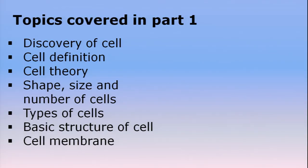Hello children, welcome to today's class. Today we are going to read Part 2 of the chapter 'Fundamental Unit of Life'. I am your teacher, and this is Chapter 5 of your Class 9 Science book. The topics we covered in Part 1 were: discovery of cell, definition of cell, cell theory, shape, size and number of cells, types of cells, basic structure of a cell, and cell membrane.